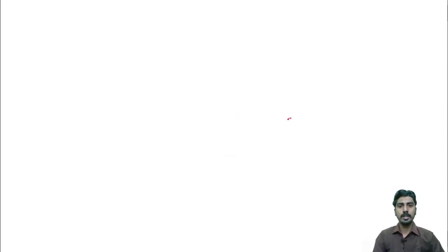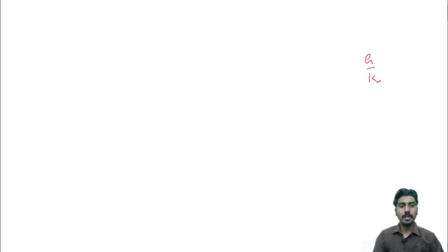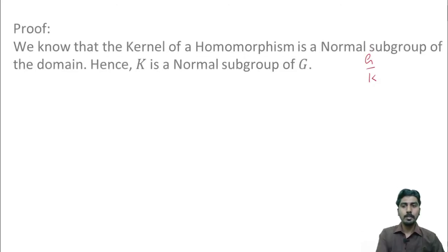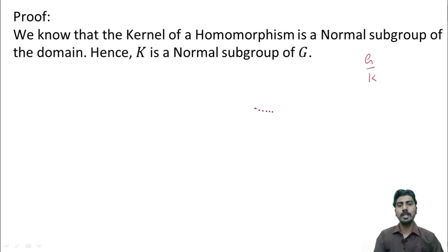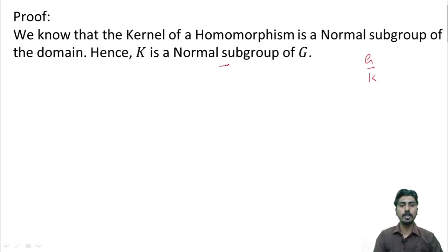Now, let us prove the theorem. To define the quotient group G by K, first, K should be a normal subgroup of G. But we know that kernel of a homomorphism is always a normal subgroup of the domain. Hence, K is a normal subgroup of G.